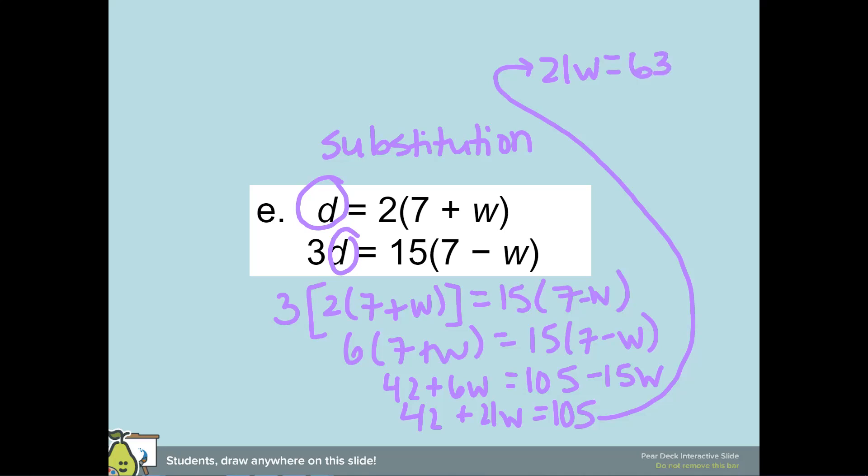I'm going to divide by 21, and I get three. So w is three, and I'm going to then put it into either equation—I think I'm going to do it into this one here—to find my d.